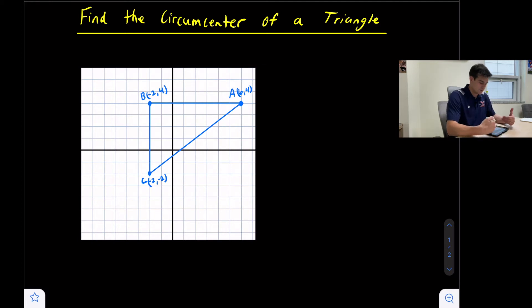In this case, we're looking at a right triangle. Because of that, we have a vertical leg and a horizontal leg, so the perpendicular bisectors will be fairly easy to find for those two sides of the triangle. The circumcenter is where all three perpendicular bisectors intersect.